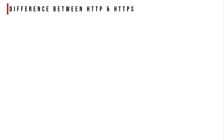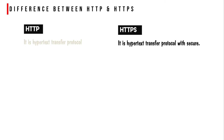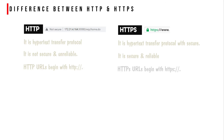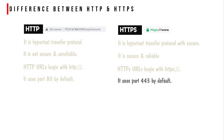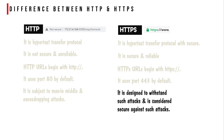The difference between HTTP and HTTPS: HTTP stands for hypertext transfer protocol while HTTPS stands for hypertext transfer protocol secure. HTTP is not secure and is unreliable, whereas HTTPS is secure and reliable. HTTP URLs begin with 'http://' and HTTPS URLs begin with 'https://'. HTTP uses port 80 by default, but HTTPS uses port 443 by default. HTTP is subject to man-in-the-middle and eavesdropping attacks, while HTTPS is designed to withstand such attacks and is considered secure against them.